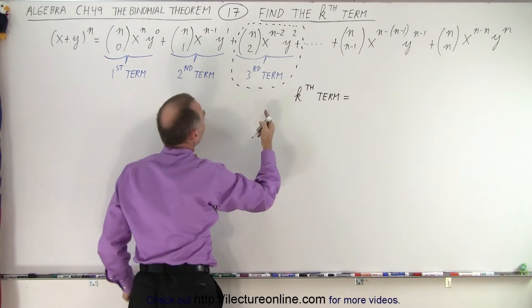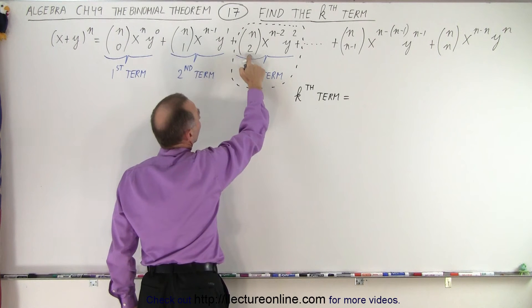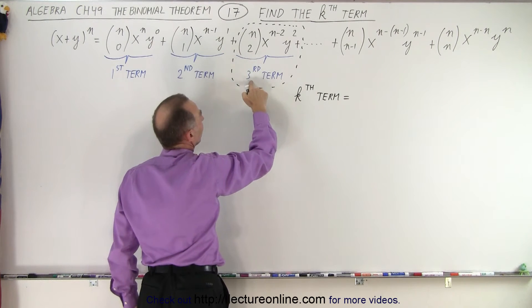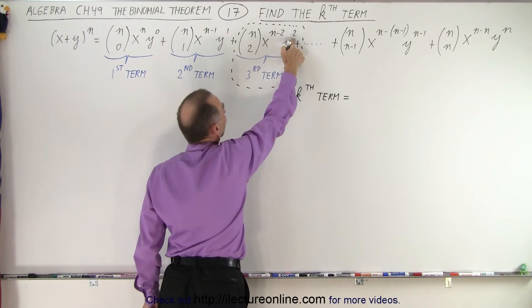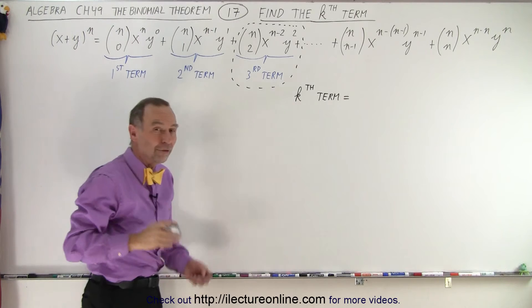If we're going to find the third term, notice that the number underneath is 2, which is 1 less than 3, and the exponents are also 1 less than 3. So from that,